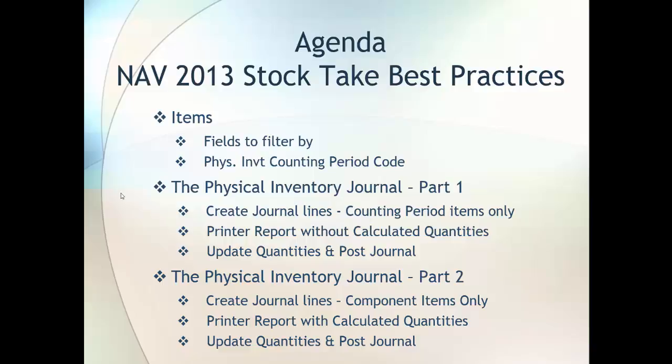We will then look at how we can print our report out, and in this situation we're going to be printing the calculated quantities - that is, the quantities that Navision thinks are in stock. We will then look at how we can update the quantities and how we post the journal. In part 2 of the physical inventory journal we will be looking at items that are components only, excluding those with built materials or assembled items from our physical inventory journal.